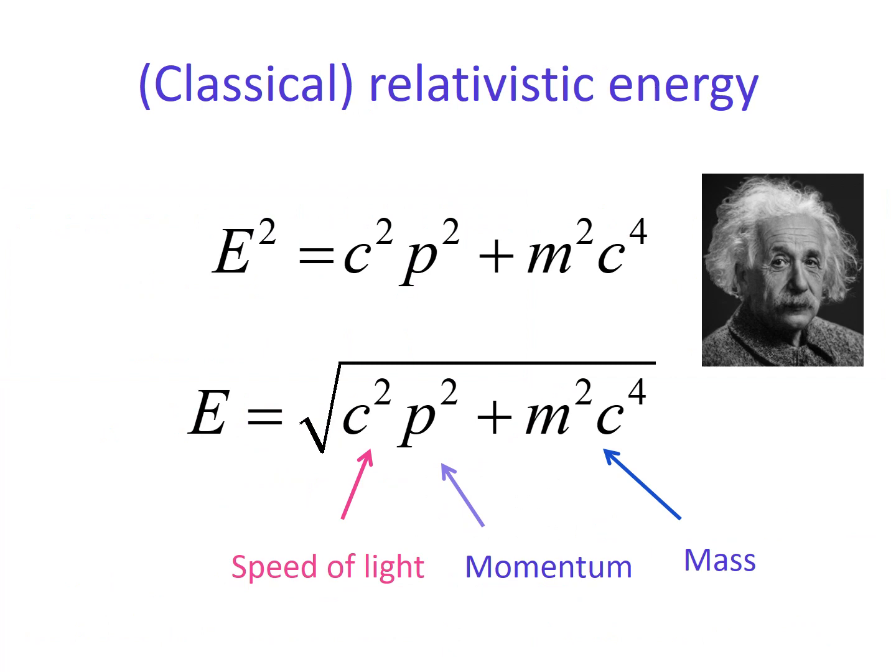Then, we look at classical relativistic energy, and it is represented as E squared form. So E itself should be the root of this term, and it contains the speed of light c, momentum p, and mass.